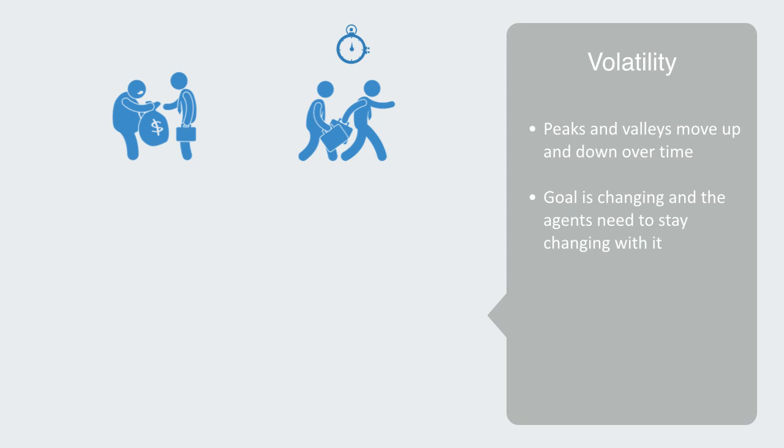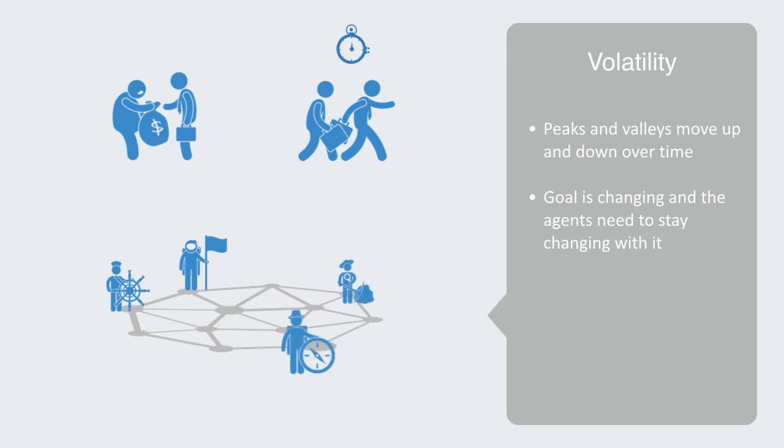If we then turn up the interdependency between the actions that agents take, the environment will become more dynamic as the topology is being continuously shaped and reshaped by the actions and reactions of the agents to each other, with agents needing to be continuously adapting.